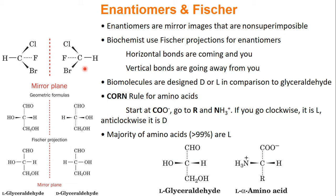When chemists want to show a chiral compound, they generally use a Fischer projection. We have two different projections: the geometric formula and the Fischer projection. In the geometric formula, wedges mean the molecule is coming out of the screen toward you, and dashed lines are going away from you. In the Fischer projection, horizontal lines are coming toward you and vertical lines are going away from you.